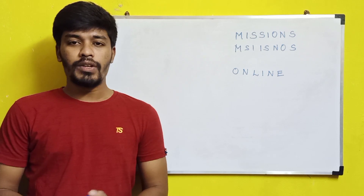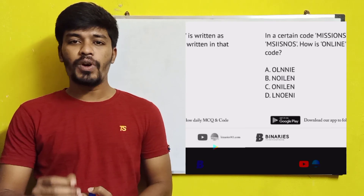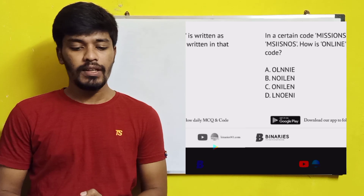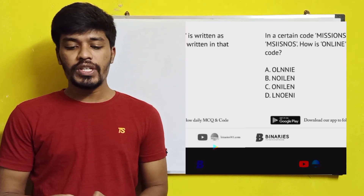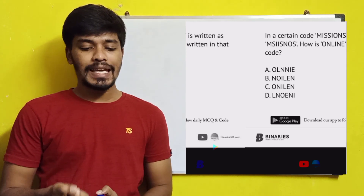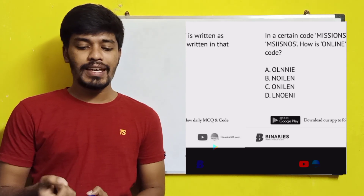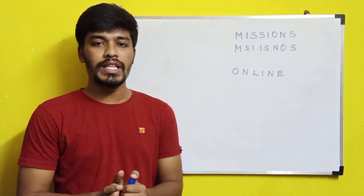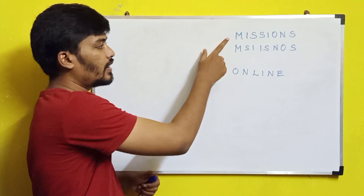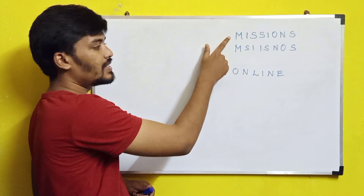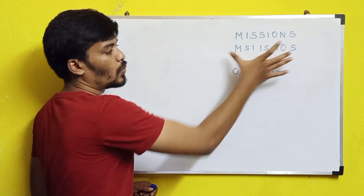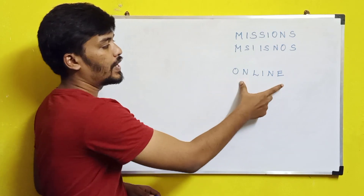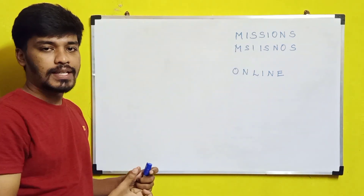The first question is from the concept of coding and decoding. The question states: in a certain code, 'machines' is written as M-S-I-I-S-N-O-S. How is 'online' written in that code? They are asking what the code for 'online' is using the same pattern.